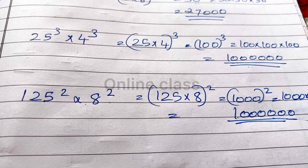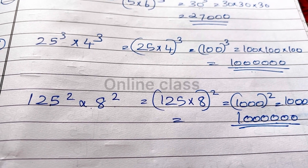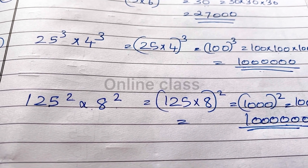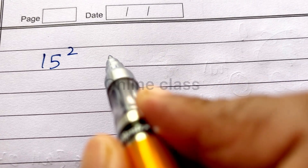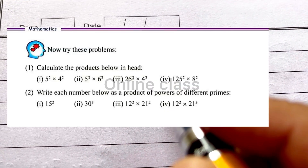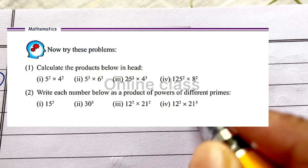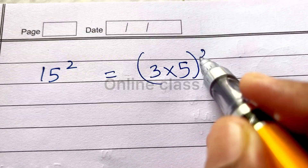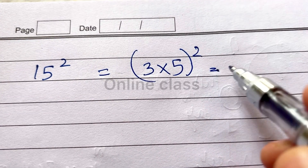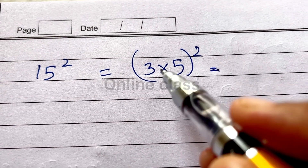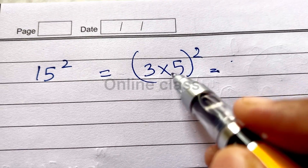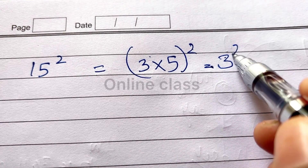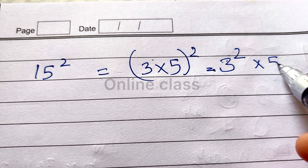Write each number below as a product of powers of different primes. The next question is 15 square. 15 square: 15 is 3 into 5, so we write 3 into 5, whole square. That gives us 3 square into 5 square.